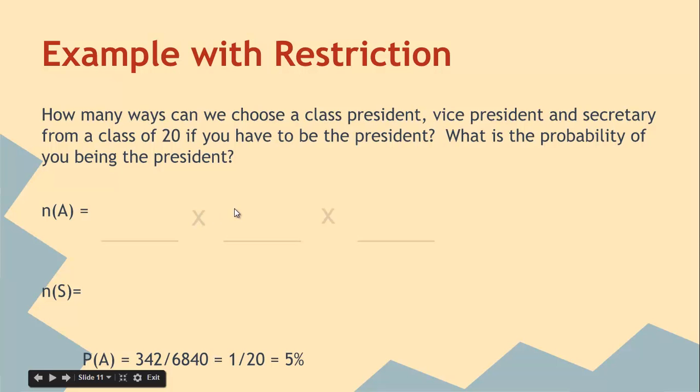So an example with a restriction, this is just really a probability example. We can use the slots to find out the number of ways to do president times vice president times secretary. If you have to be the president, there's only one way for that to happen. And then since you're already the president, there's 19 people that could be the vice president, 18 people that could be the secretary. In the total ways, which is what N of S is, you don't have to be the president. So there's 20 people that could be, 19 ways that we can be the vice president, 18 ways to be the secretary. If we divide those two numbers, 19 times 18 is 342, 20, 19, and 18 is 6840, we get one out of 20, which you can see the 19's cancel and the 18's cancel. Which is kind of what you'd expect. The probability that you're the president is just one out of 20 because you pick the president first.